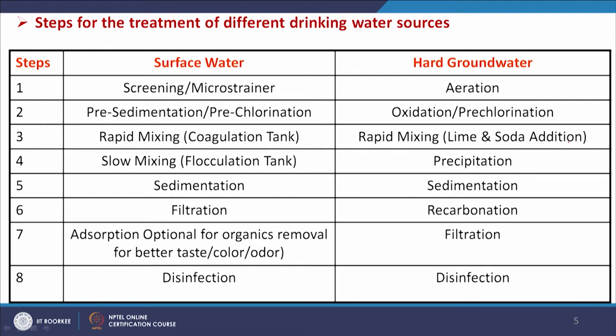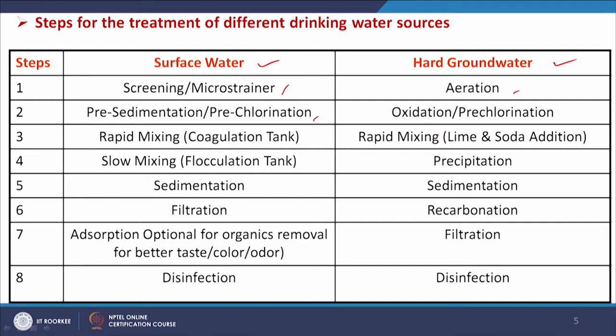Looking at the steps for treatment of different drinking water sources, surface water and hard ground water follow almost similar steps. For surface water, screening or micro straining is used, but for hard ground water this is not required. In some cases, aeration is required for ground water, because by providing oxygen some reduced forms of different ions can be converted to their oxidized form and removed more easily. Pre-sedimentation and pre-chlorination — or oxidation and pre-chlorination — are also needed for ground water to convert certain ions to their oxidized form for easier removal.